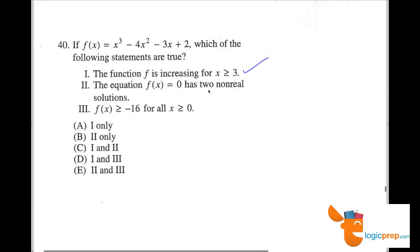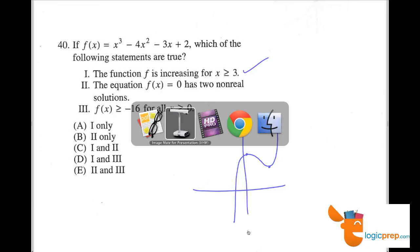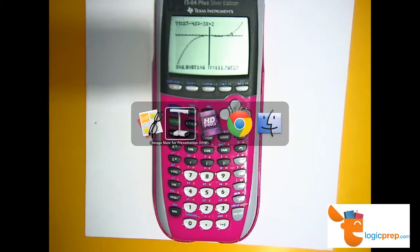The function f of x equals zero has two non-real solutions. A non-real solution would happen on a graph when it has a turning point that doesn't hit the x axis, like right here, for example, and right here. So if we look back at this function carefully, let's take a look at it.